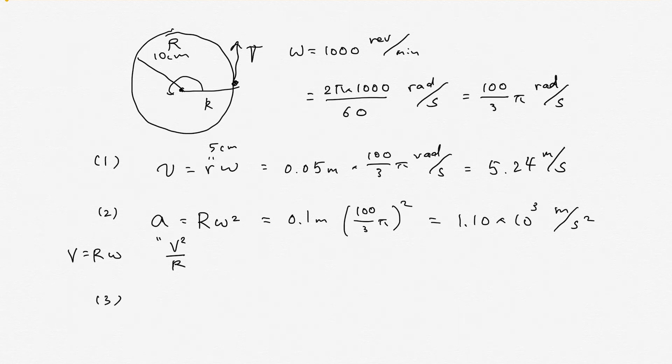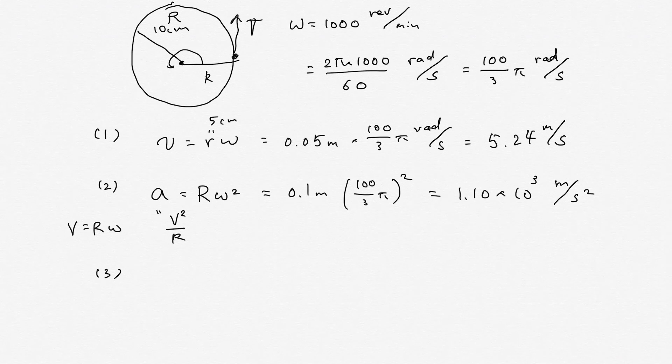And question number 3 is the total distance a point on the rim moves in 1 second. So distance becomes v times t. v is r·ω. So you can use this expression here. And t is 1 second. So you can substitute: 0.1 meter times 100π/3 times radian per second times 1 second. Then it becomes 10.5 meters. This is the answer to the third question.